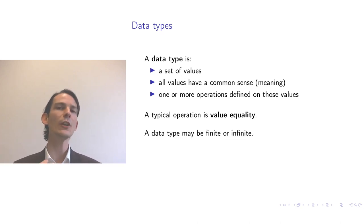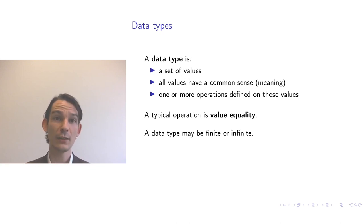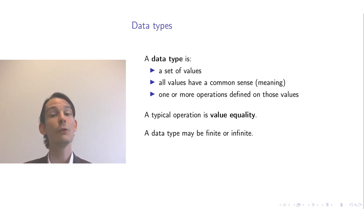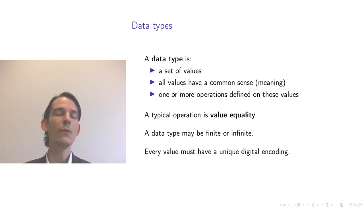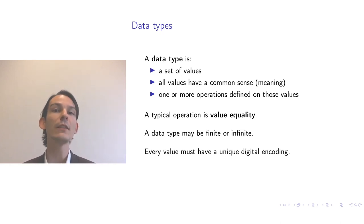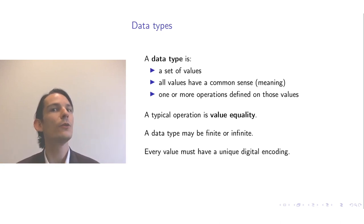There are two different ways of partitioning data types. You have finite data types, in which the set of values is finite — there are only finitely many values. Or you have an infinite data type, meaning the set of values is infinite. It is necessary for every data type to be able to encode its values digitally, because otherwise how do you store it in the memory of a computer?